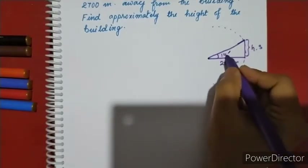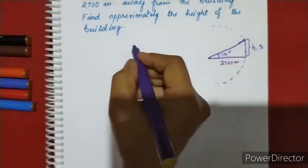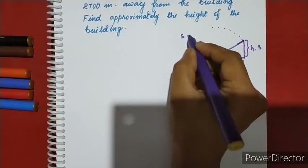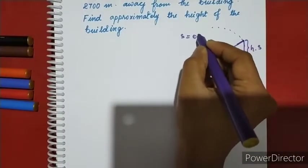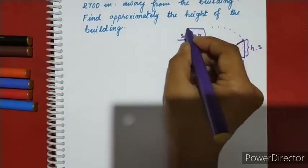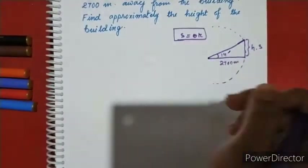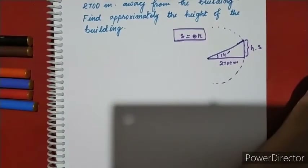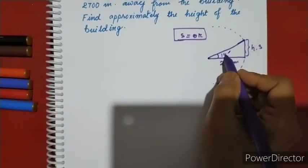In this formula, we use s equal to theta times r, where theta must be in radians.